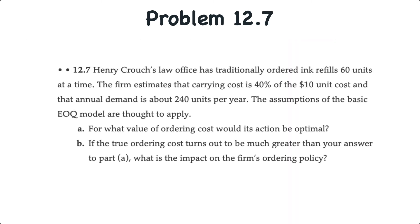And now we'll look at problem 12.7. Here we have a law office that has traditionally ordered ink refills, 60 units at a time, and the firm estimates that carrying cost is 40% of the $10 unit cost, and that the annual demand is about 240 units per year. We're also assuming that the basic EOQ assumptions apply. The first requirement is to determine for what value of ordering cost would its action be optimal, i.e. ordering 60 units at a time. And then B, if the true ordering cost turns out to be greater than our answer in part A, what's the impact on the firm's ordering policy?